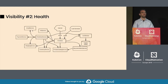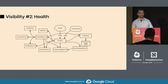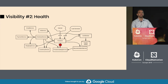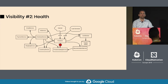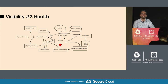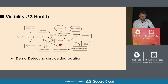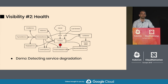Now I want to discuss health - how can you find what's happening in your cluster using this data? I'm going to introduce service degradation in the product catalog service. I'm going to do some manual chaos engineering.